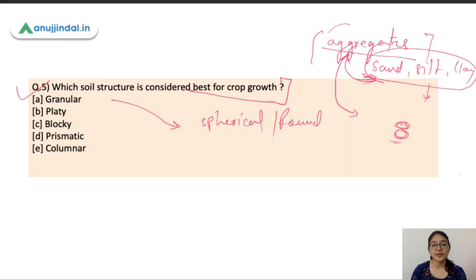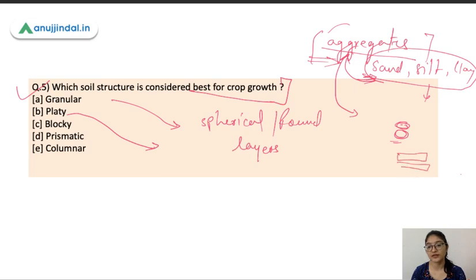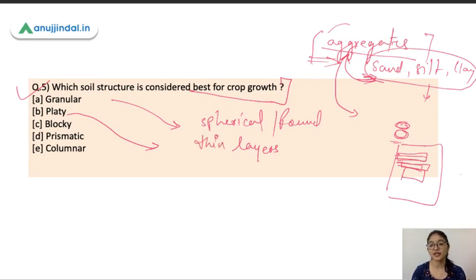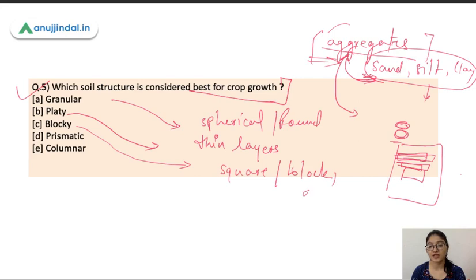In platy structure, aggregates are arranged in thin horizontal layers, with horizontal expansion greater than vertical. In blocky structure, aggregates are arranged in square-shaped blocks with angular or sharp edges.